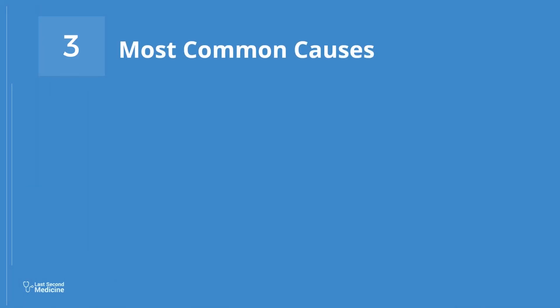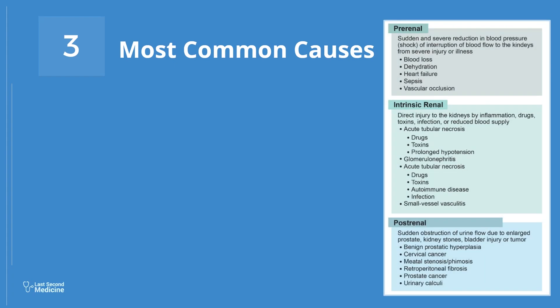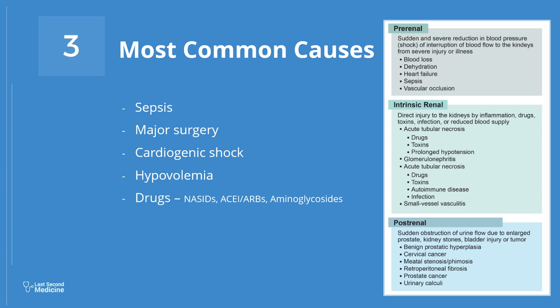Number 3: Most Common Causes of AKI. You already know the etiological classification of AKI into prerenal, renal, and post-renal causes. Among these, the most common causes that lead to AKI are: sepsis, major surgery, cardiogenic shock, hypovolemia, drugs like NSAIDs, ACE inhibitors, angiotensin-2 receptor blockers, and aminoglycosides, hepatorenal syndrome, and urinary tract obstruction.